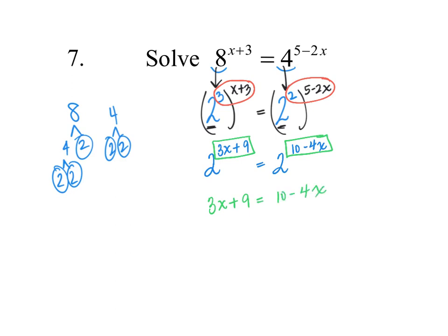Now that the bases match, the exponents have to be equal, so we rewrite this as three x plus nine equals ten minus four x. That's a linear equation with x on both sides. We move the four x over: seven x plus nine equals ten. Move the nine over: seven x equals one. Divide both sides by seven, and we get x equals one seventh.